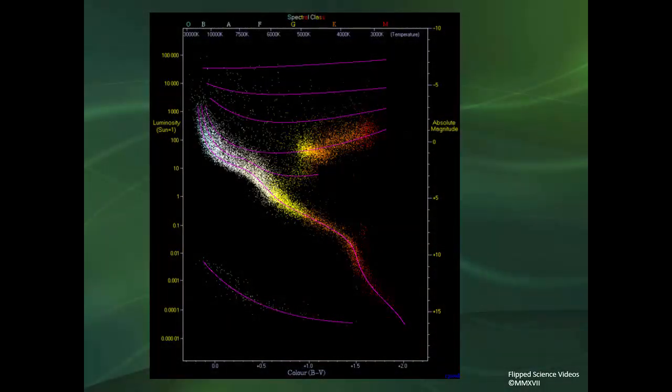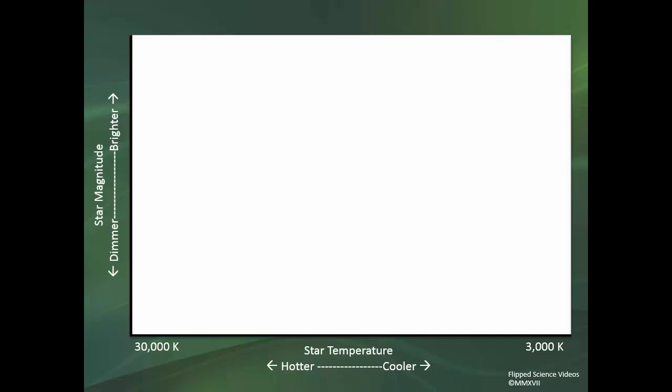This is a copy of the HR Diagram or Hertzsprung-Russell Diagram. It is taking stars and plotting them based on two characteristics: their luminosity, or their brightness, and their temperature. What you can see is that there are natural patterns of these stars. Let's go in a little bit more depth of how this is created.